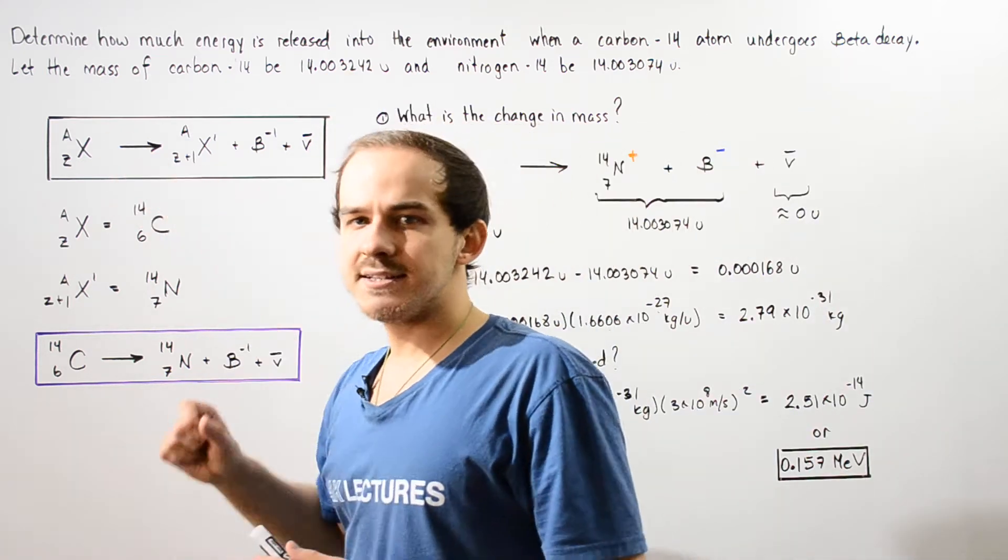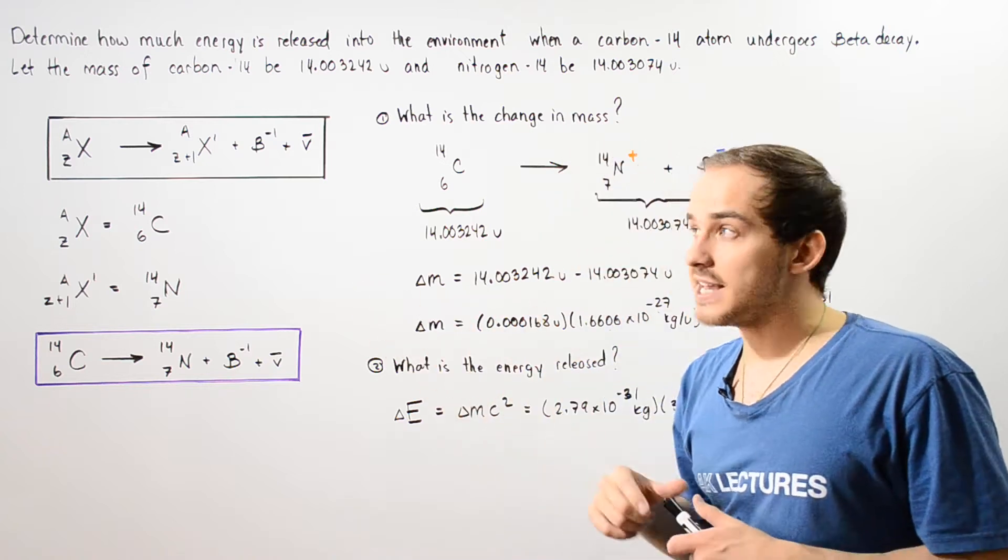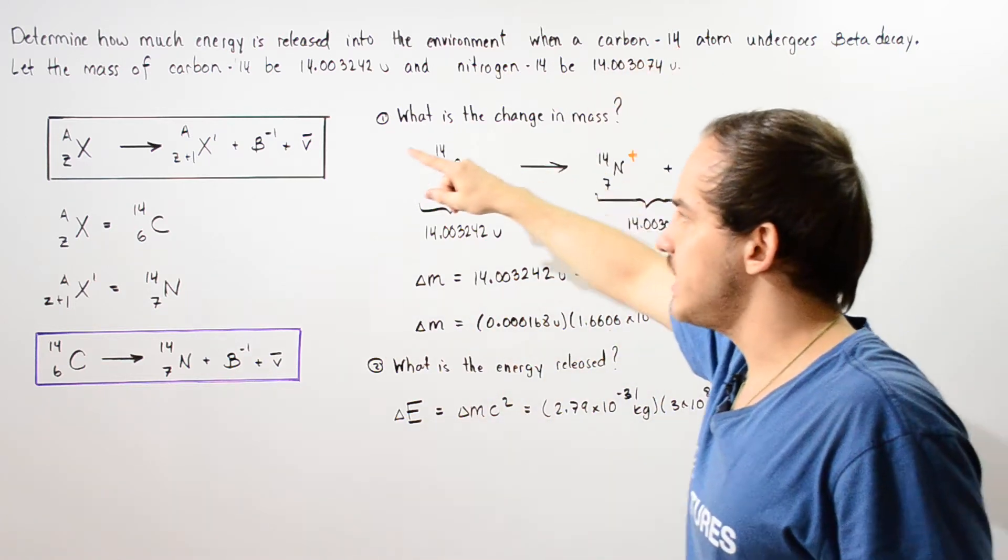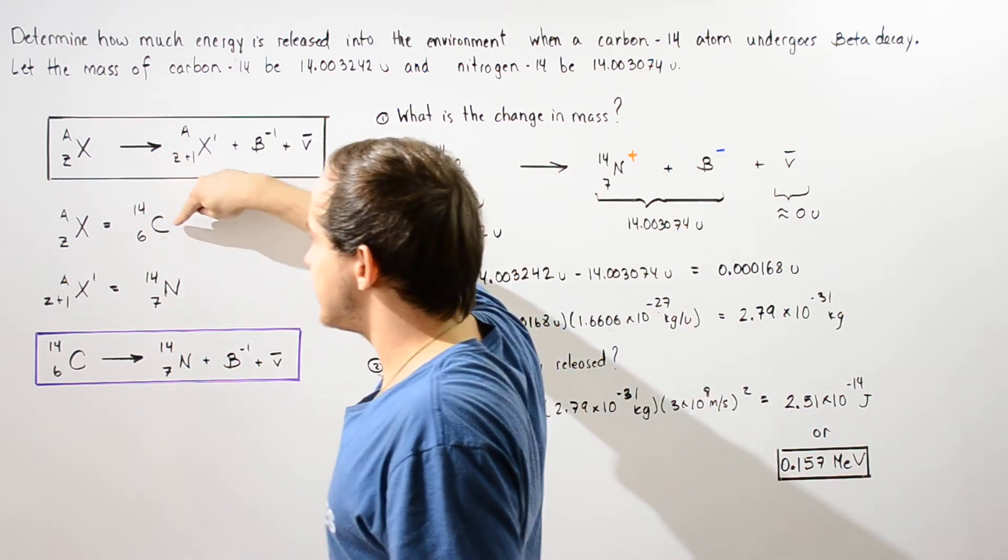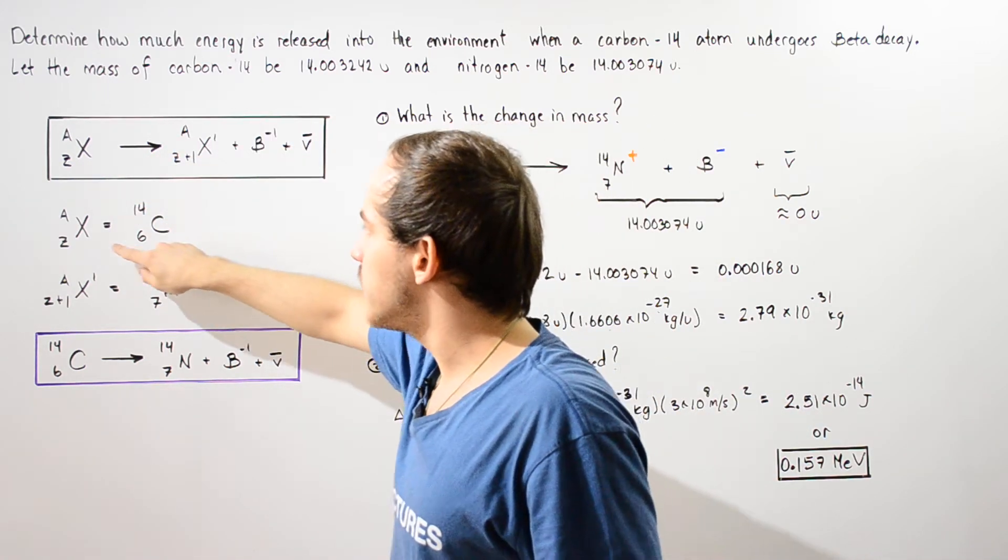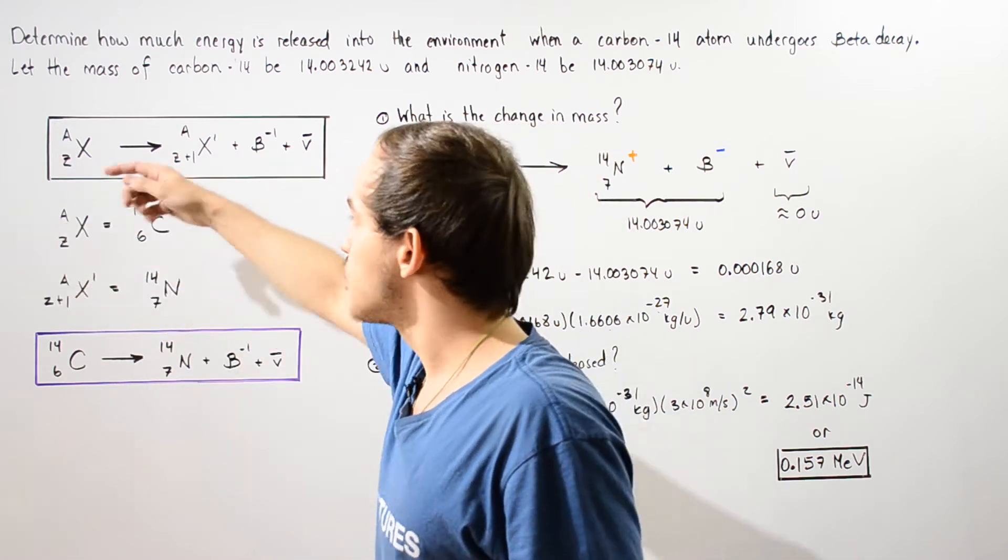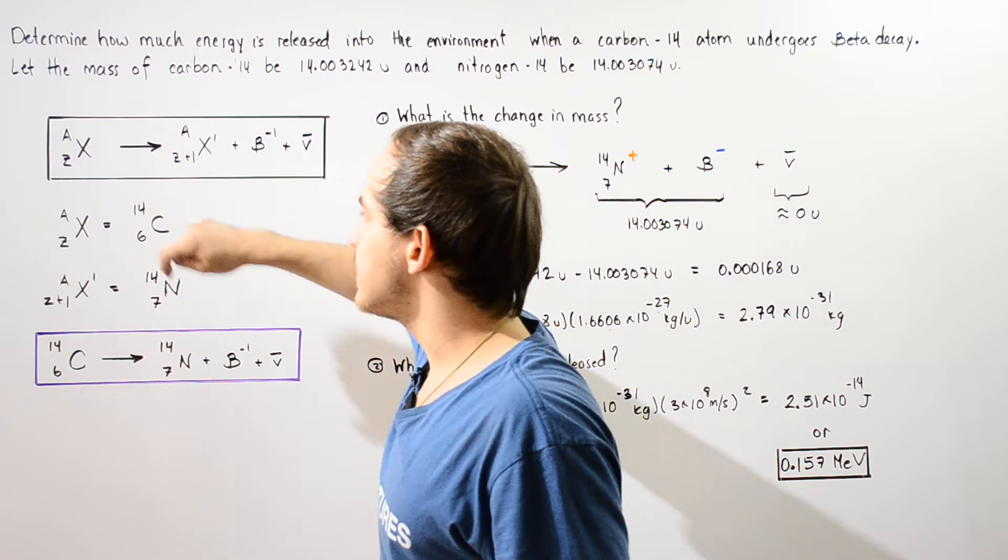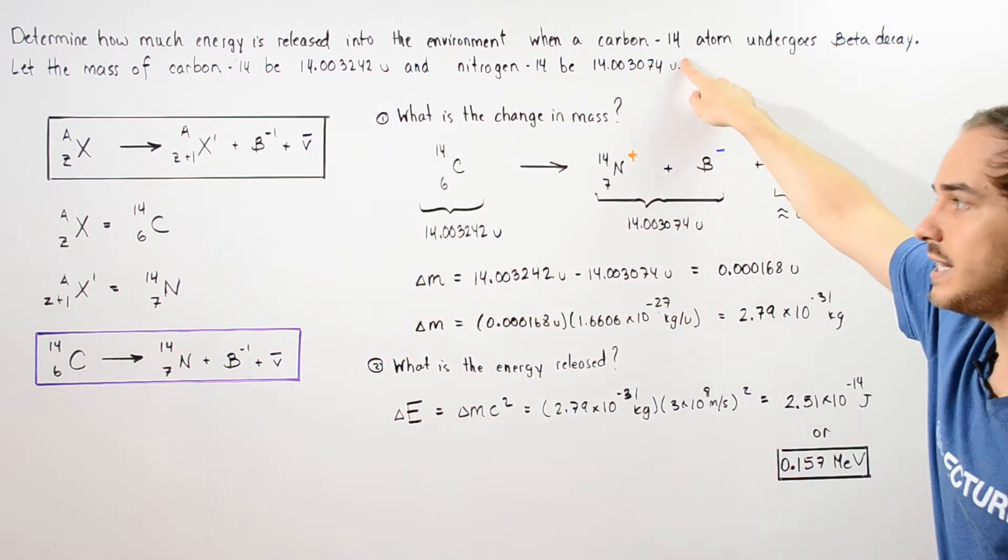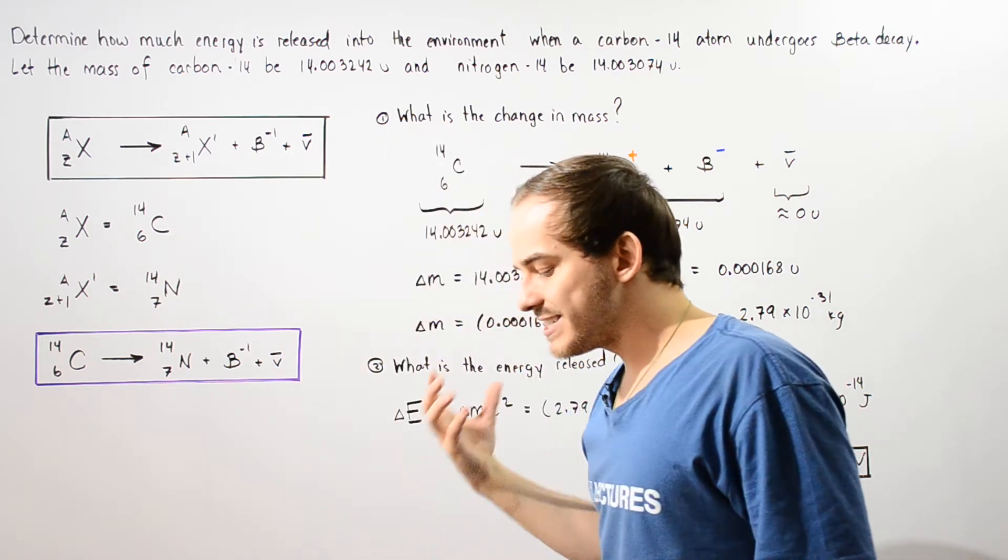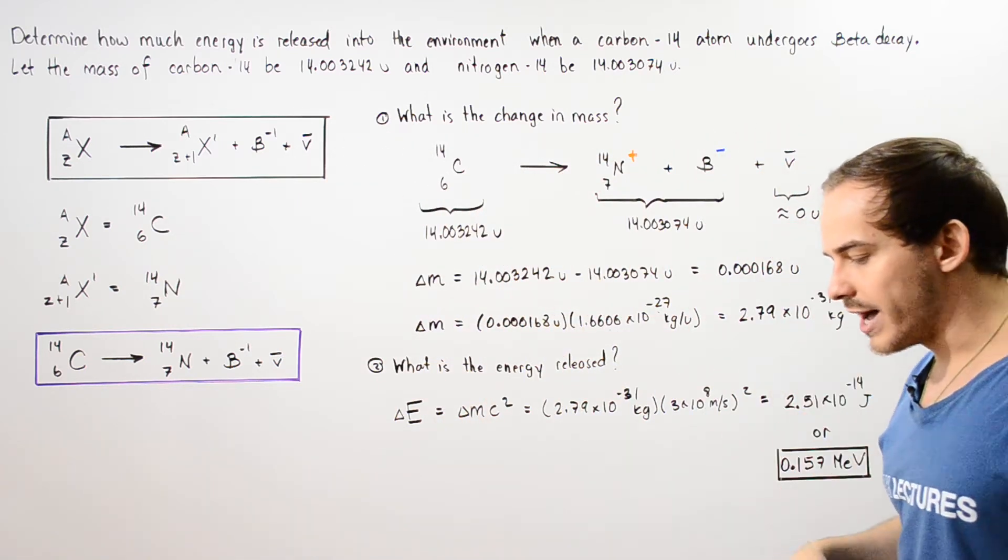Now what exactly is the parent nucleus? Well in this case we know that we begin with the neutral carbon-14 and so this X is equal to C which stands for carbon. The Z, the atomic number, is six number of protons and the number of nucleons is given by 14. So that means in this parent nucleus we have six protons and eight neutrons.